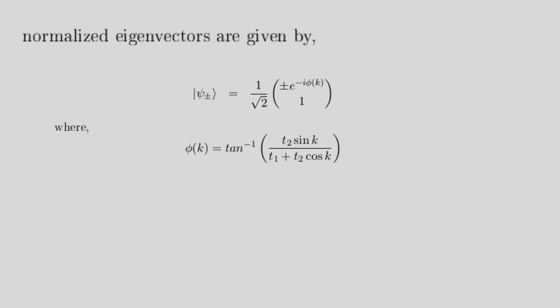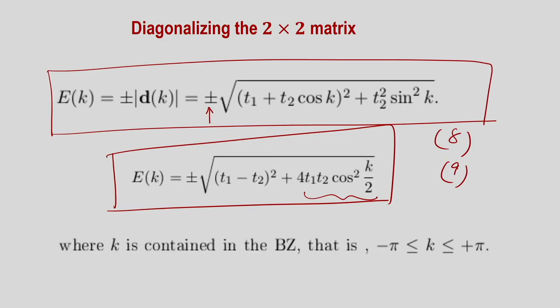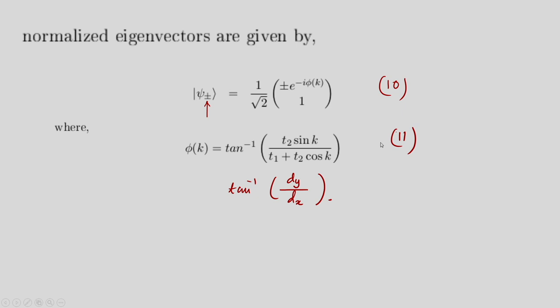The eigenvectors of the SSH Hamiltonian correspond to the ± energy eigenvalues and can be written as (e^{-iφ_k/2}, ±e^{iφ_k/2})/√2, where φ_k = arctan(d_y/d_x) = arctan(t₂ sin k / (t₁ + t₂ cos k)). This φ_k is the angle of the d-vector in the d_x-d_y plane, not a derivative. With both energies and eigenvectors, the problem is completely solved, but we are not yet at the topology.